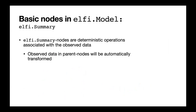When doing LFI — ABC-type, BSL-type, or otherwise — you need summary nodes. In ELFI, these are pre-built node types that are deterministic operations and always associated with observed data. A special feature of summary nodes is that they automatically transform the observed data carried from the parent nodes, so you don't have to worry about working with inconsistent object types.